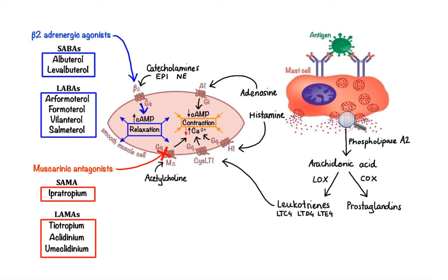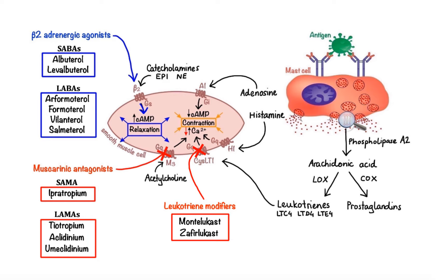Moving on to the next class of drugs that affect contraction of bronchial smooth muscle — leukotriene modifiers. As previously discussed, mast cells are the primary producers of cysteinyl leukotrienes, therefore drugs that alter their action are typically reserved for treatment of asthma. Medications in this class function in two ways: first, by blocking the binding of leukotrienes to cis-LT1 receptors, which reduces bronchial smooth muscle contraction. Examples of drugs that target cis-LT1 receptors are montelukast and zafirlukast. The second mechanism involves inhibition of lipoxygenase, the enzyme that converts arachidonic acid into leukotrienes. An example of a drug that targets lipoxygenase is zileuton.